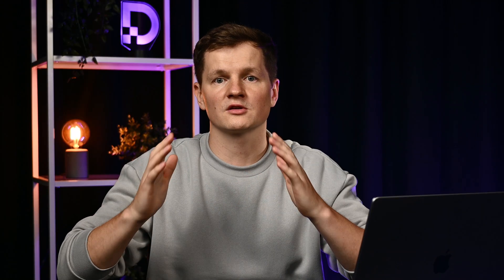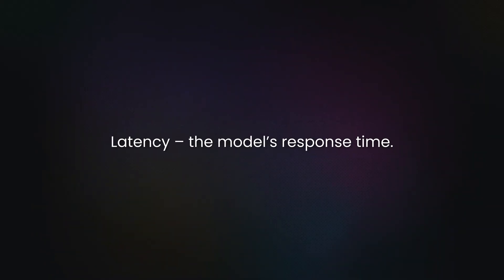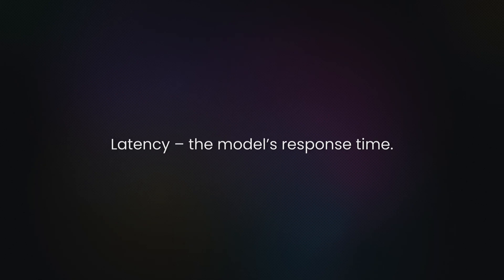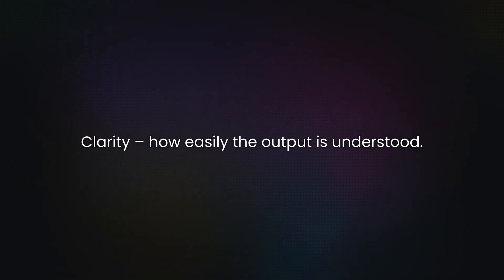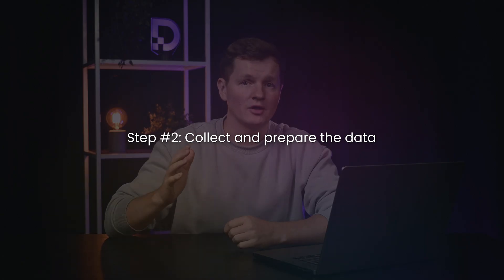Once your AI goals are set, you'll need to choose performance metrics. Common metrics include accuracy — or how often the model gets it right — latency, or how fast it responds, and clarity, or how easy its outputs are to understand. Then it's time to collect and prepare your data. You can gather this manually, using web scraping tools, or by using pre-made datasets. Just keep your training and validation datasets separate, or you'll get misleadingly good results.